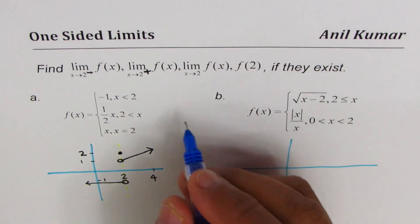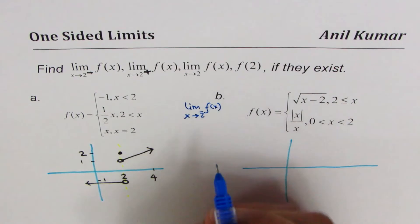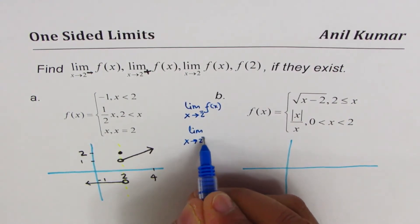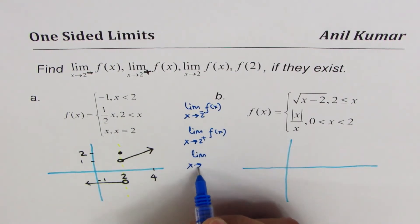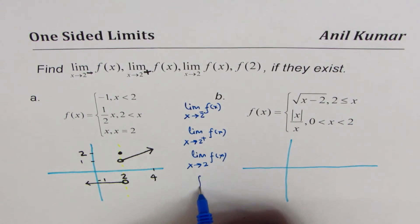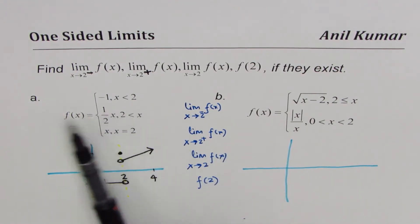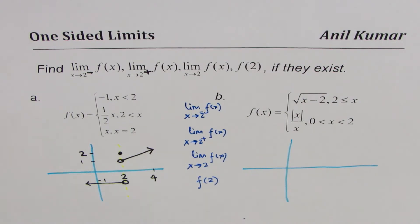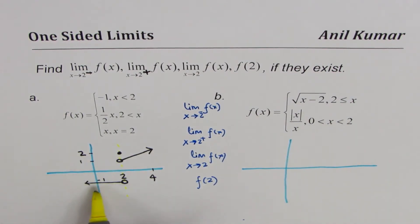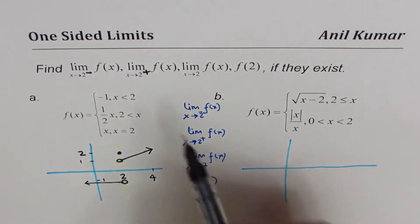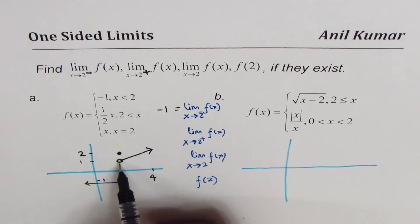We are looking for: the limit as x approaches 2 from the left side, the limit as x approaches 2 from the right side, the limit at x = 2, and the value f(2). When approaching from the left side, you hit the horizontal piece and reach minus 1 — so the left-hand limit equals -1. From the right side, you travel along the straight line and reach plus 1 — so the right-hand limit equals +1.